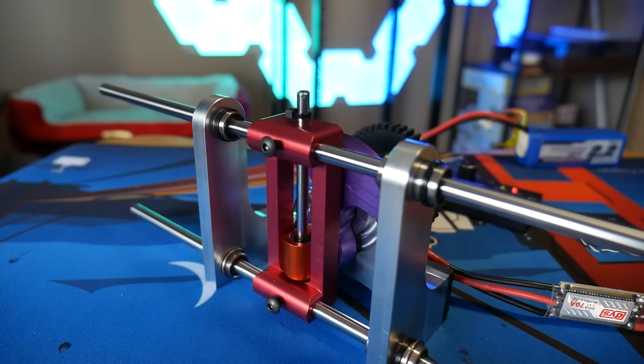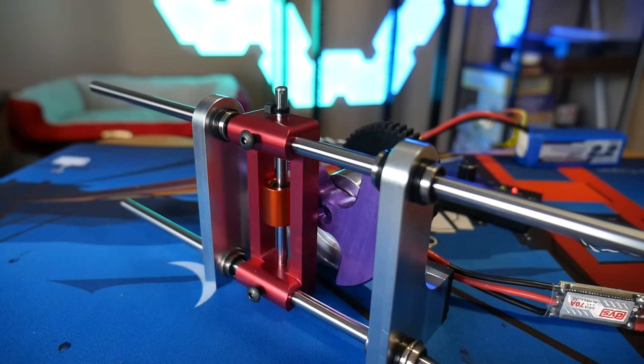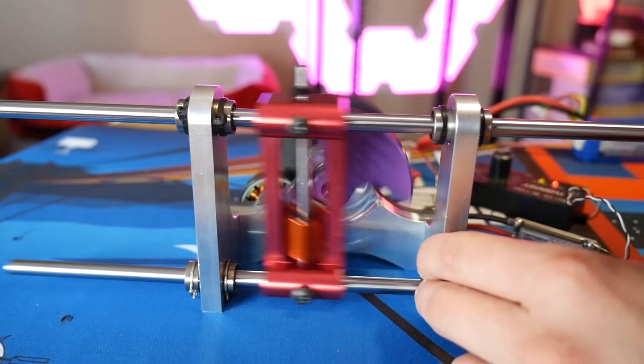So by moving the rods to the top and bottom, the entire movement is rock solid and very low friction. And as a side benefit, you can clearly see everything that's going on.